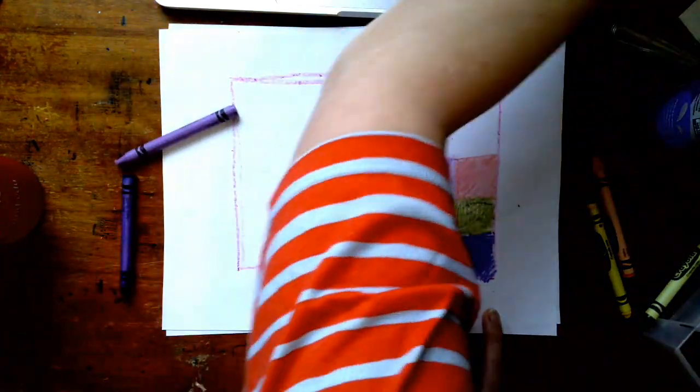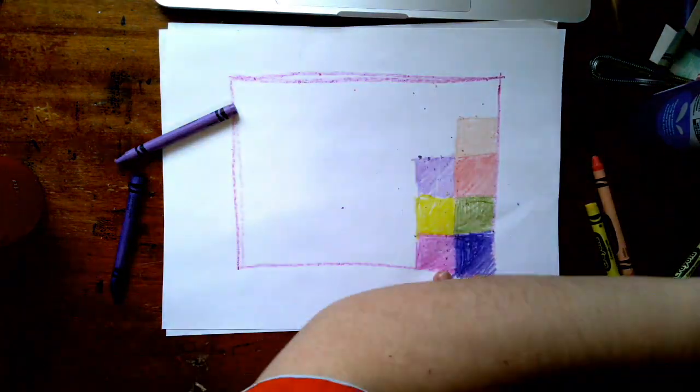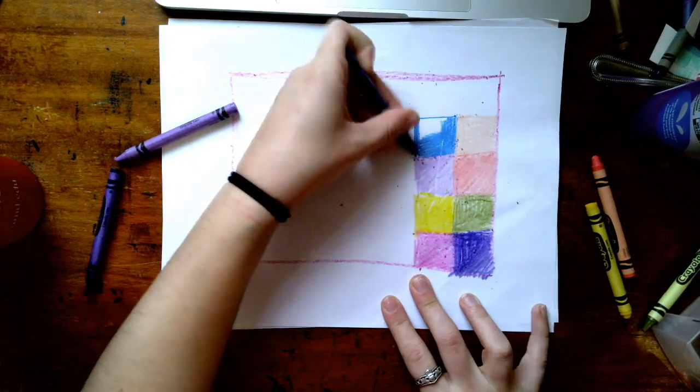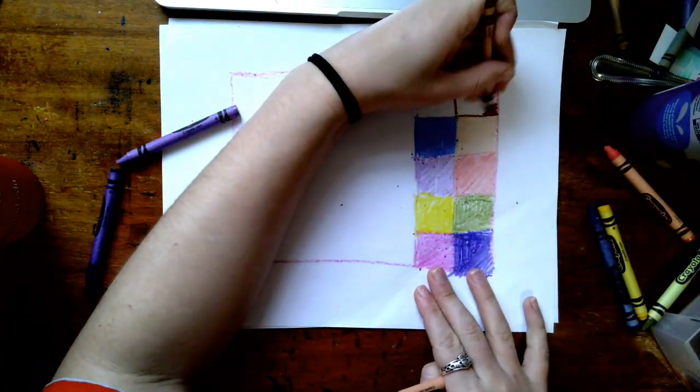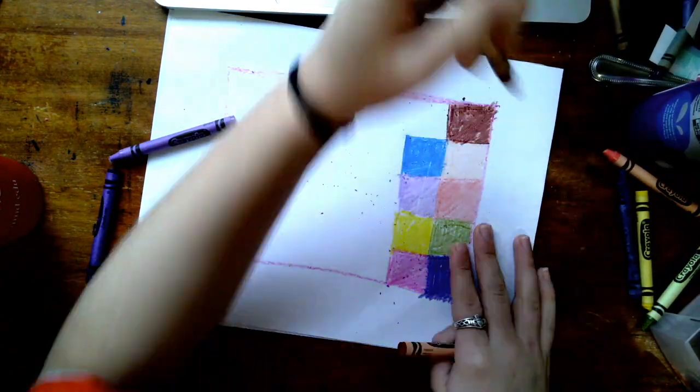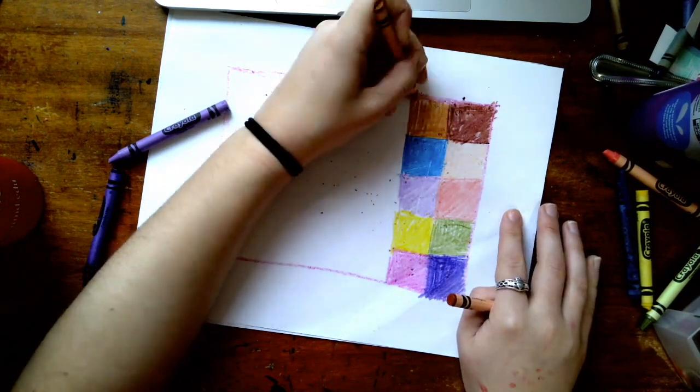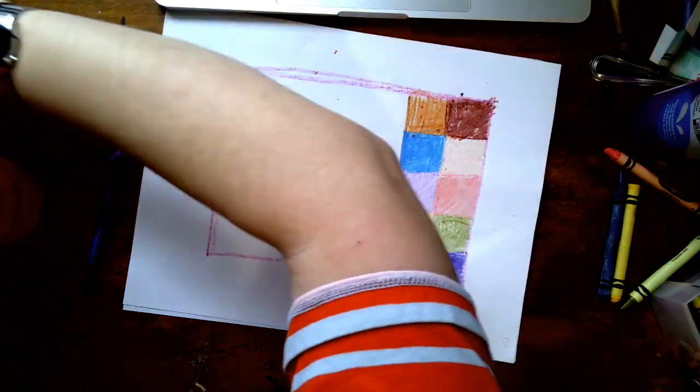So you see I've got my crayons here and I'm just coloring a bunch of squares. Now these squares are going to end up being the lines or the color for what we're going to make today. So I'm pressing pretty hard with my crayon. You can even see here where I'm coloring that brown, I got the indent of like a dent in my desk. So there's a nick in the wood and you can even see that in my indent because I'm coloring pretty hard.